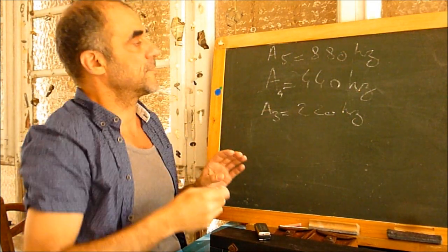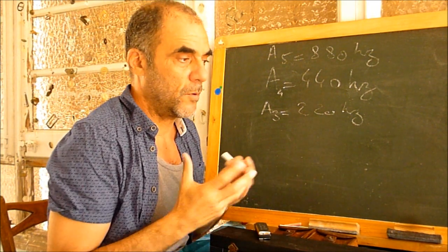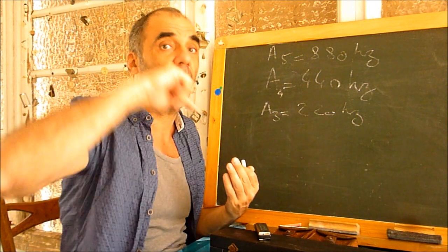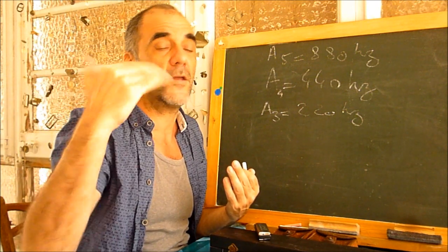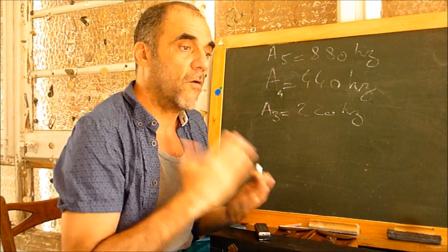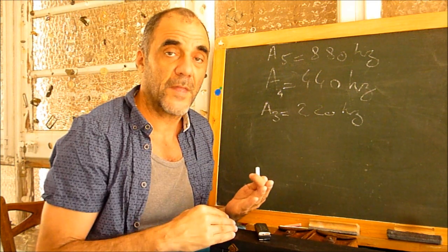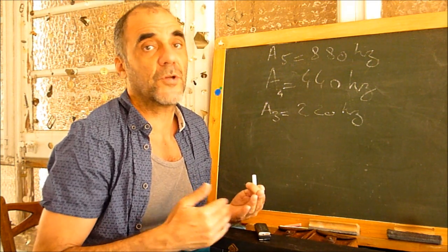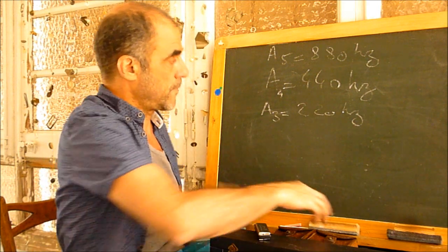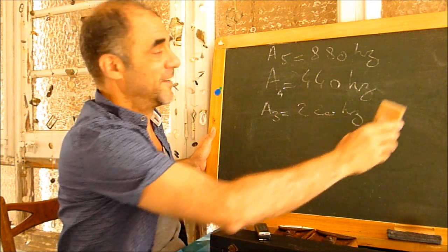That means that when we have a note, if we double the frequency, we have the same note but one octave above, higher. And if we take half, if we divide the frequency in two, we have the same note but one octave lower. This is basically physical note.